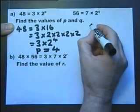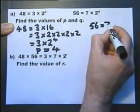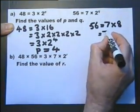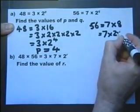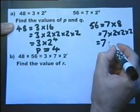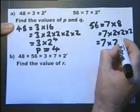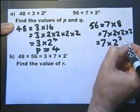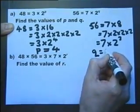Now let's look at 56. 56 equals 7 multiplied by 8. And 8 is 2 times 2 is 4, times another 2 is 8. Therefore, we've got 2 to the power of 3. So I deduce that the q is in fact 3.